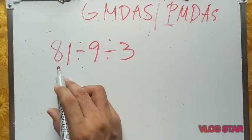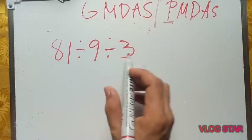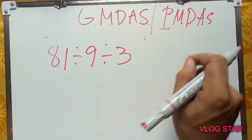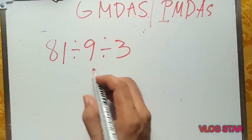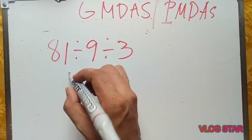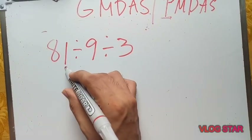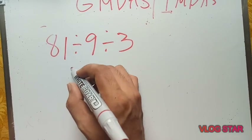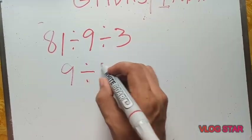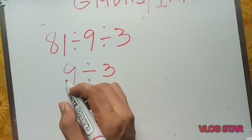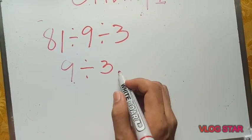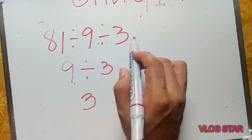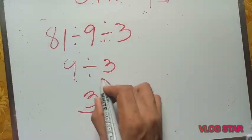Another example: 81 divided by 9 divided by 3. Using GMDAS or PEMDAS, we start from left to right. We divide first: 81 divided by 9 equals 9. Then 9 divided by 3 equals 3. So 81 divided by 9 divided by 3 equals 3.